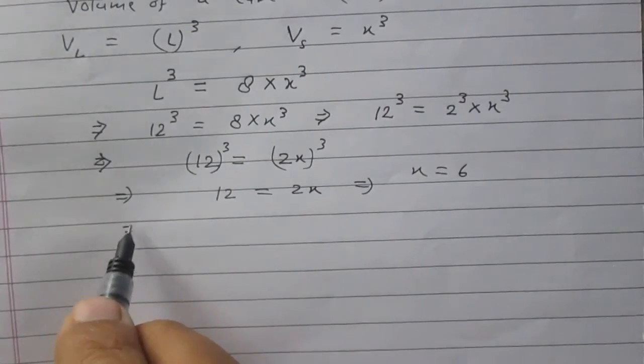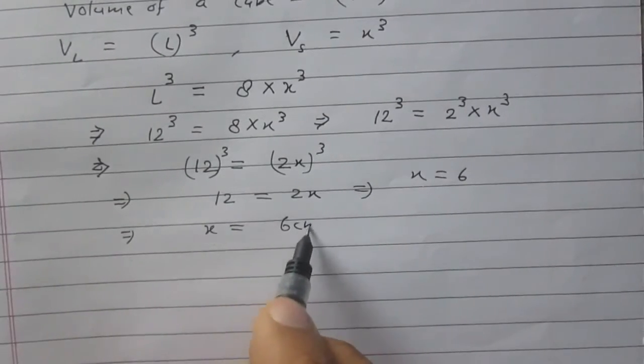In this way, we have found that side of the smaller cube is 6 centimeter.